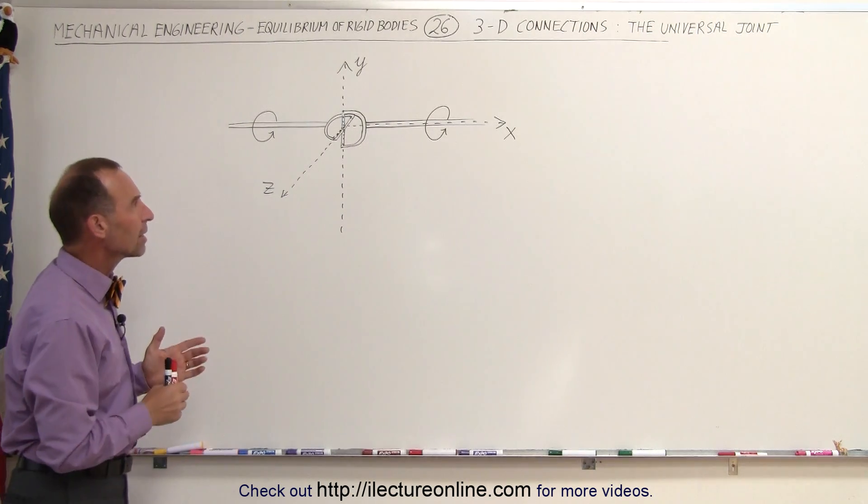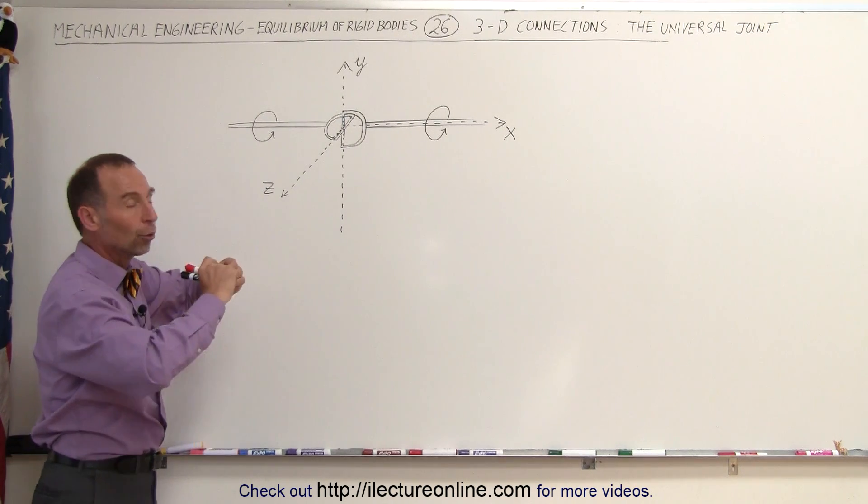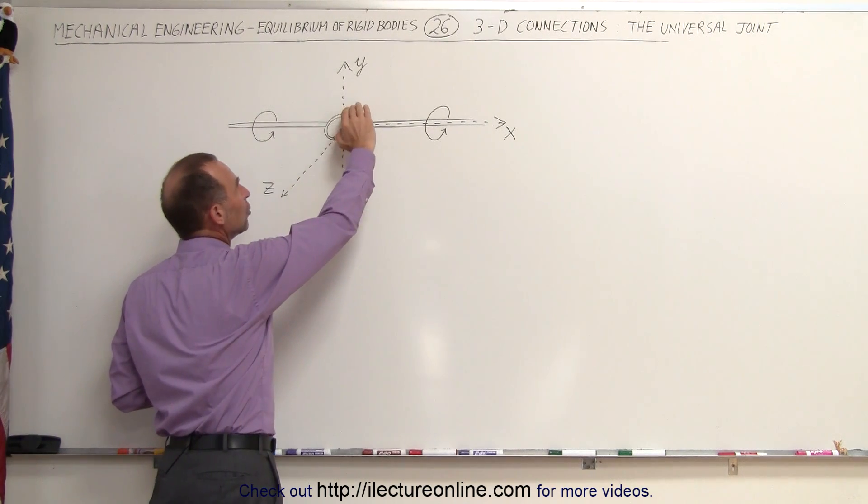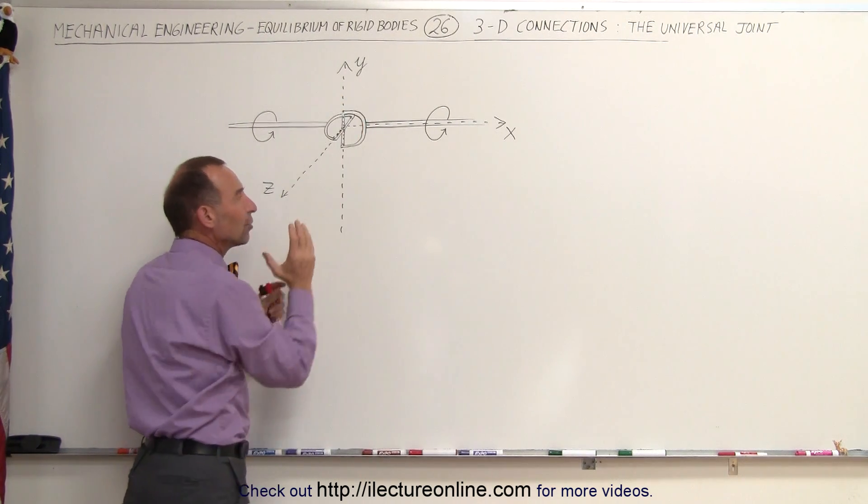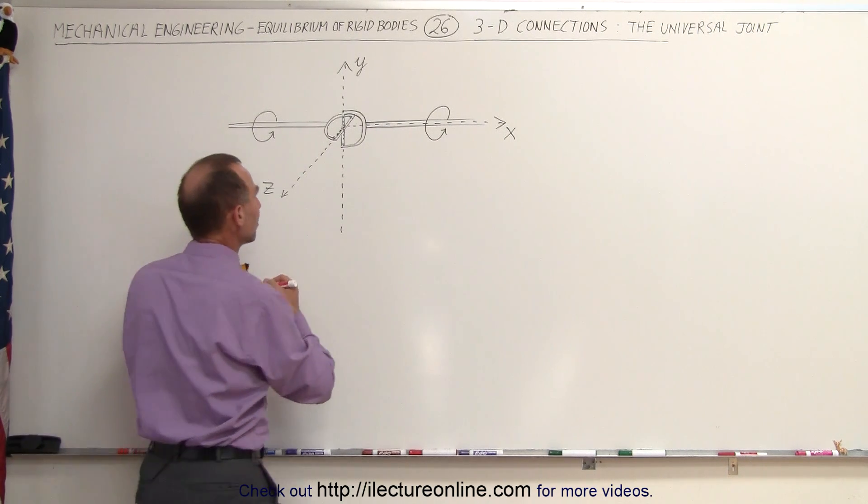The way it's drawn here, there are three forces at play. The universal joint typically is situated in such a way that the joint cannot move in either the x, the y, or the z direction. It's being held in place, so therefore forces can be at play in all three directions.